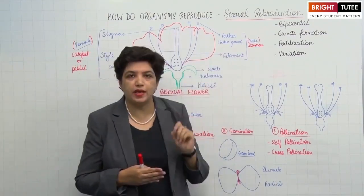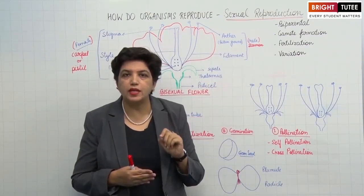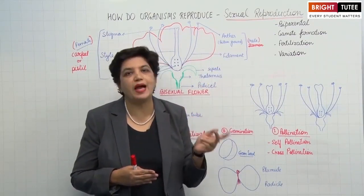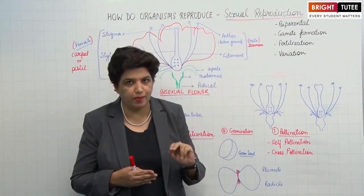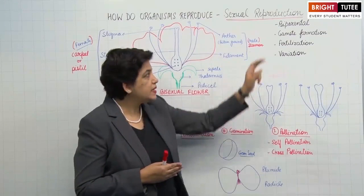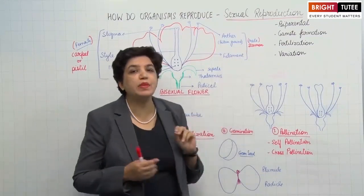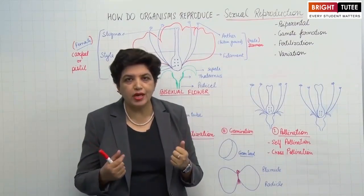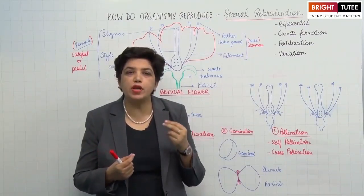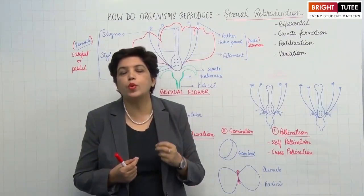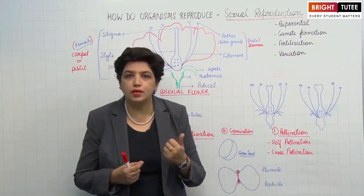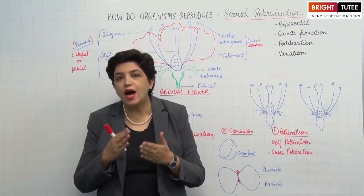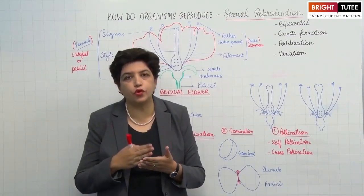The features of sexual reproduction are: firstly, it is bi-parental — that is, usually two parents are involved, the male and the female. Second, gamete formation — in the male and female body, special reproductive cells are formed which are called gametes.